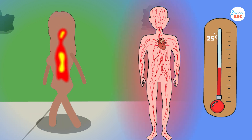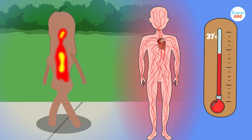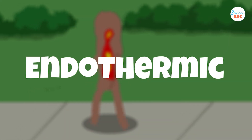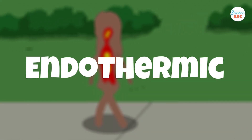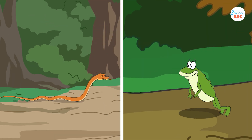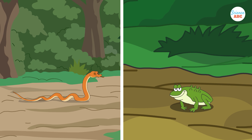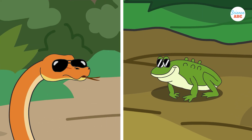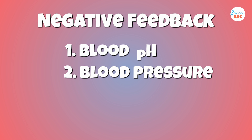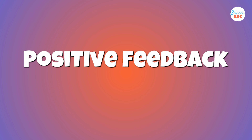Humans and other mammals maintain a constant internal temperature through a range of physiological changes. This is why we're called warm-blooded, or more correctly, endotherms. Animals like reptiles and amphibians rely on external environments to regulate their body temperature, which is why we often see lizards and snakes sunbathing. Negative feedback also controls blood pH, blood pressure, and the levels of hormones such as adrenaline and cortisol.